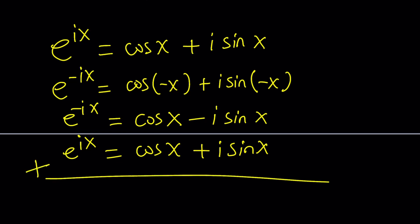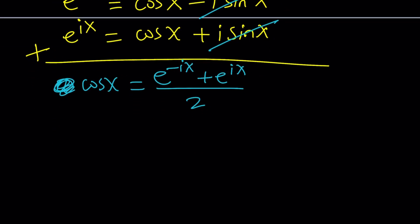And end up with two cosine x equals e to the power negative ix plus e to the power ix divided by two, because I want to isolate cosine x. Great. So we were able to express cosine x in terms of our exponential e to the power something.